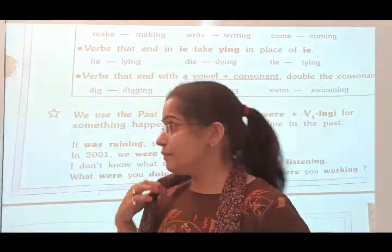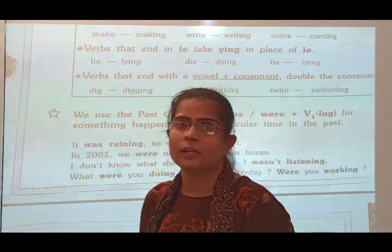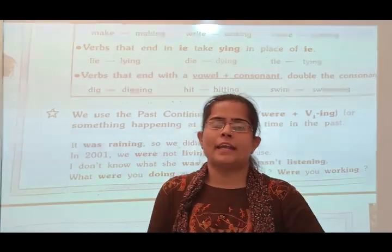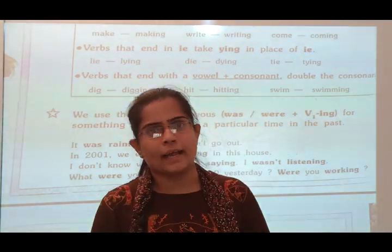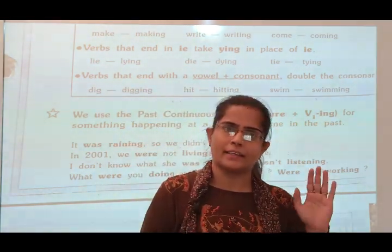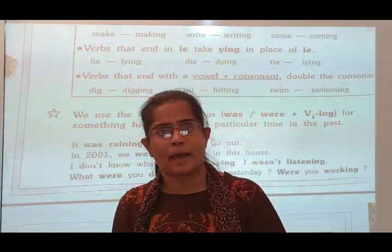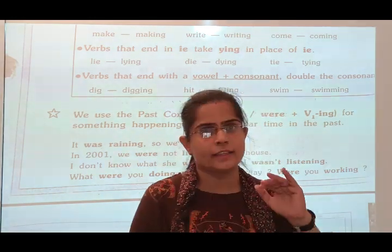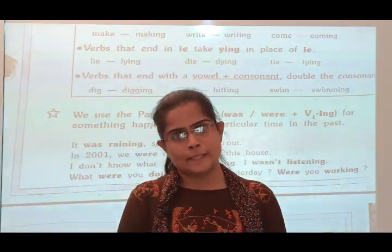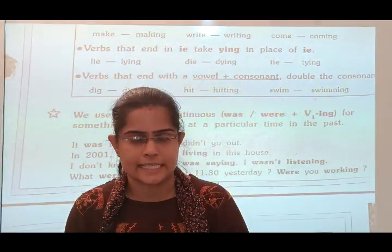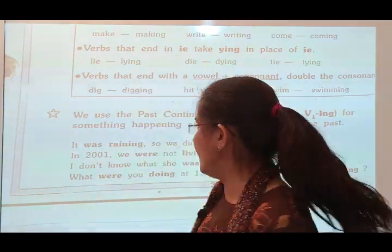Now the concept of past continuous tense. In which situation do we use past continuous tense? We use past continuous tense for something happening at a particular time in the past. For example, yesterday at a particular time I was going to market. When we speak about something happening at a particular time in the past, we use past continuous tense. The formula is: Subject plus was/were plus verb-ing and then object.